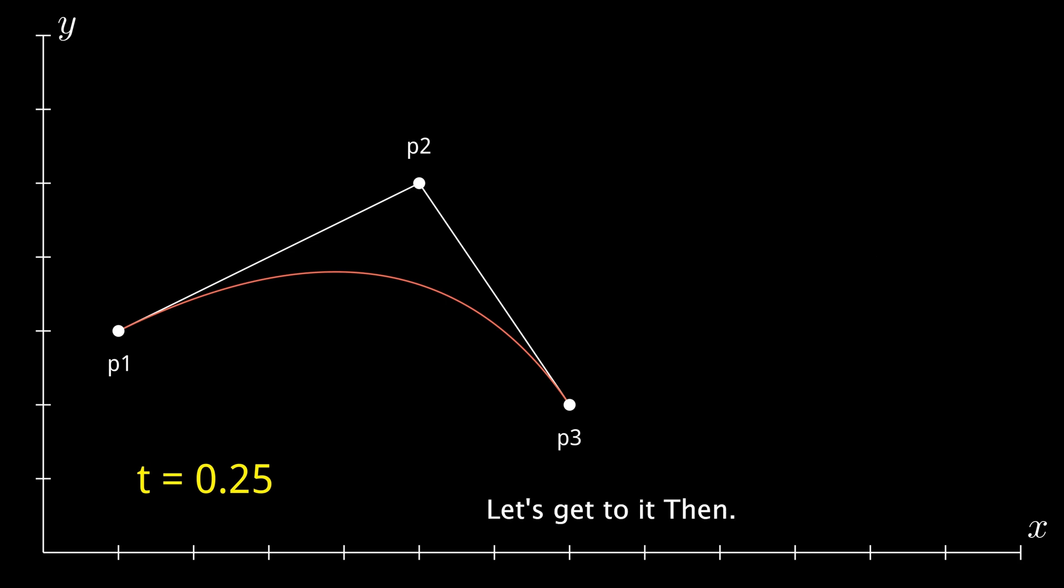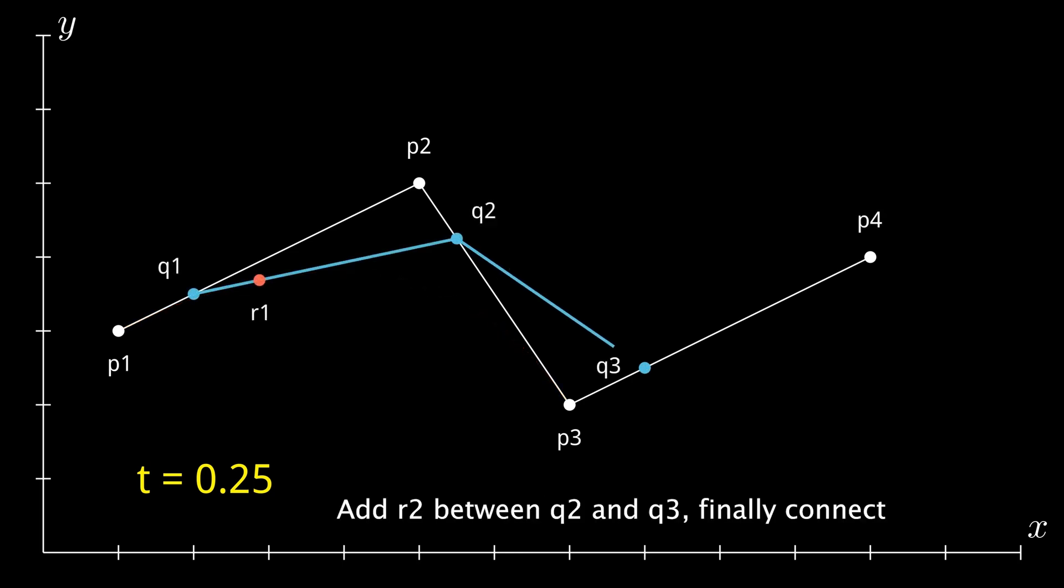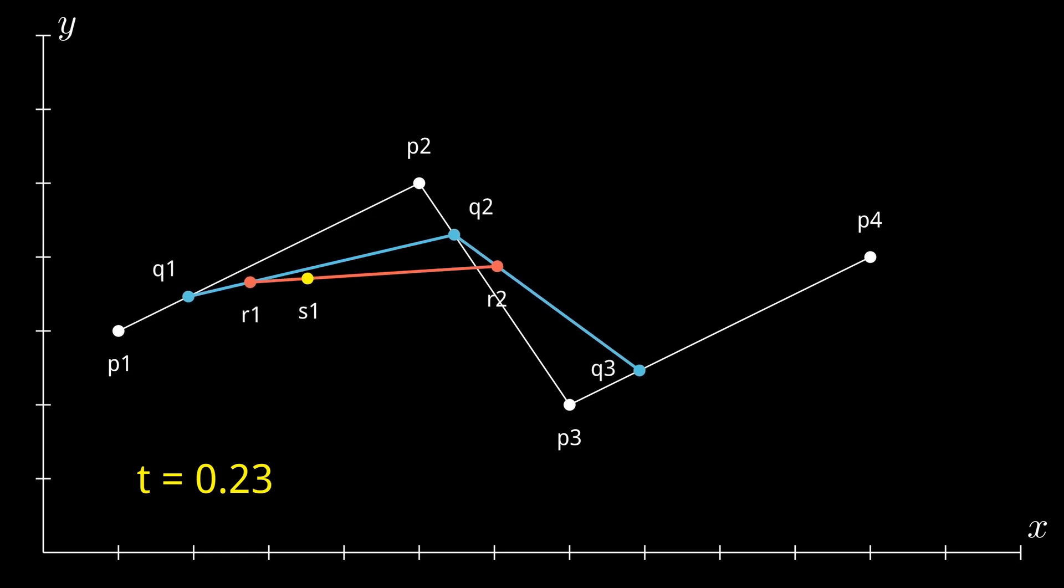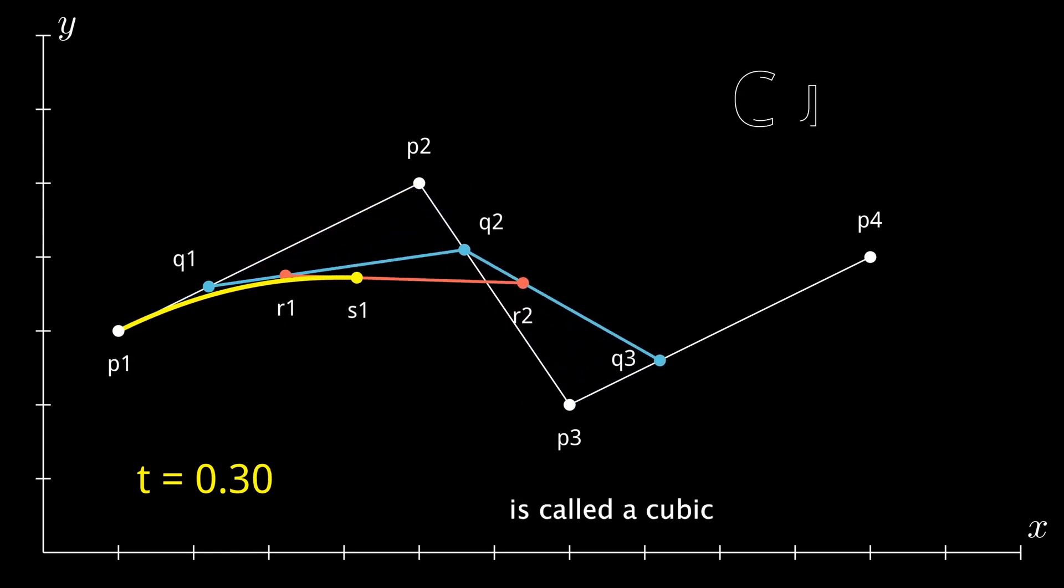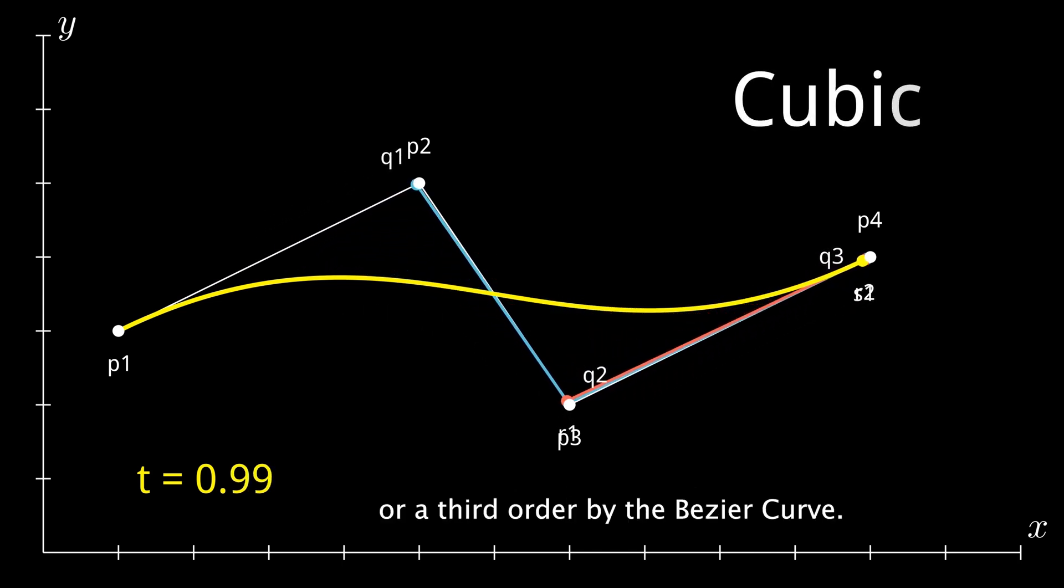Let's get to it then. Add another point P4 and Q3 between P3 and P4. Add R2 between Q2 and Q3. Finally, connect R1 and R2 and add a new point called S1. The path S1 takes as T goes from 0 to 1 is called a cubic or a third-order Bezier curve.